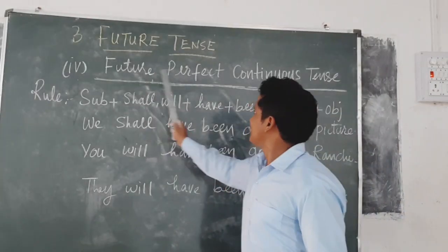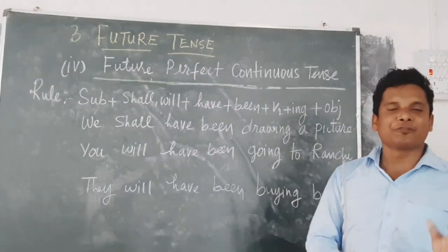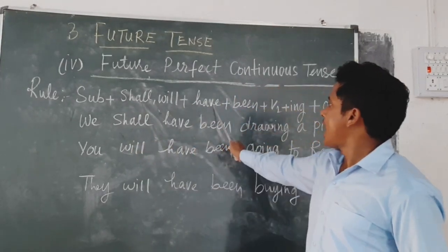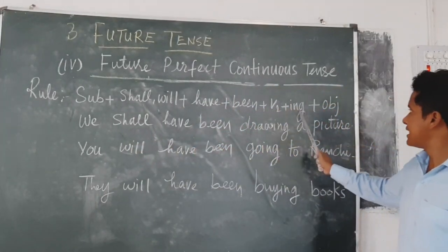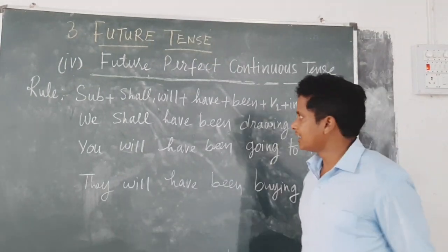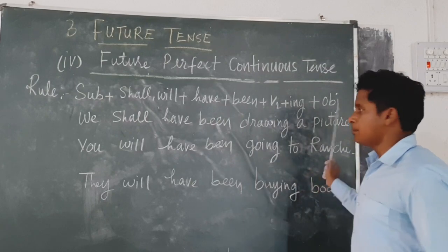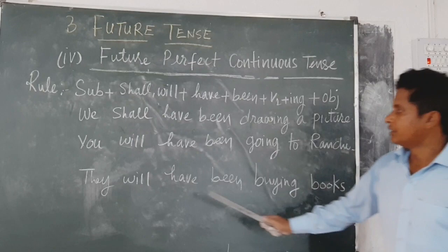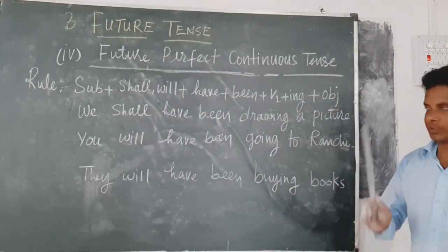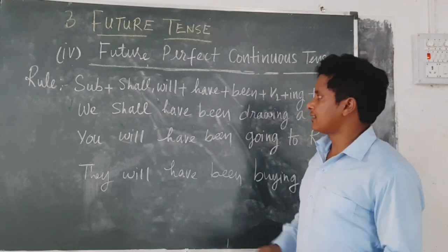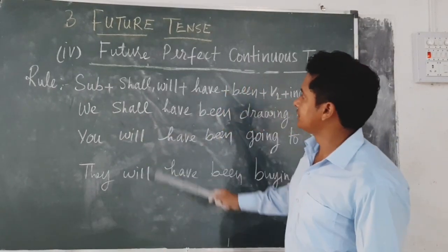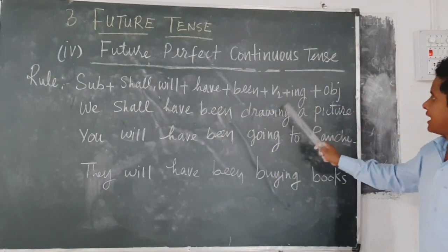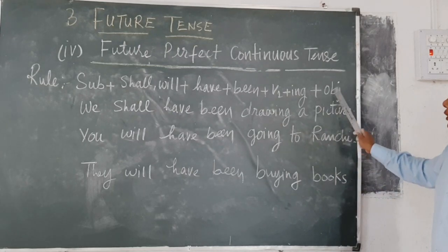And the fourth one is future perfect continuous tense. The rule of future perfect continuous tense is: subject plus shall/will plus have plus been plus verb plus ing plus object. Examples are: we shall have been drawing a picture, you will have been going to Ranchi, they will have been buying books. In the first sentence, subject is we, with we shall is used, then have been, verb plus ing is drawing, and object is a picture.